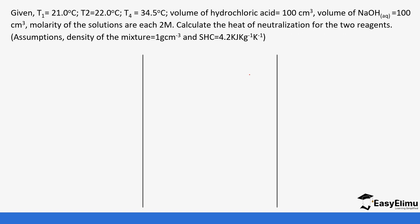Let's work through a few example questions. Given temperature T1 = 21°C (initial temperature of HCl), temperature T2 = 22°C (initial temperature of NaOH), and temperature T3 = 34.5°C (final temperature after mixing). The volume of hydrochloric acid and sodium hydroxide are both given, and the molarity of both solutions is 2 M. Calculate the heat of neutralization.